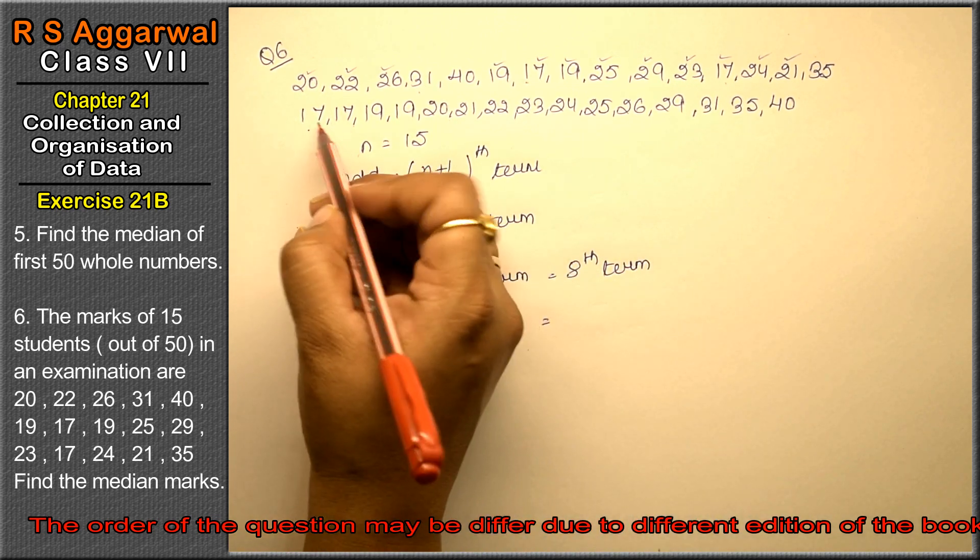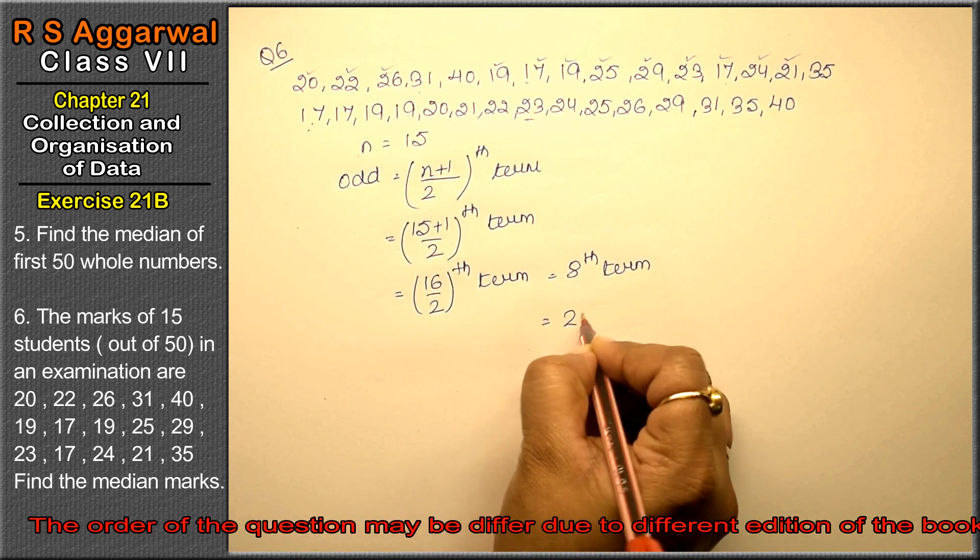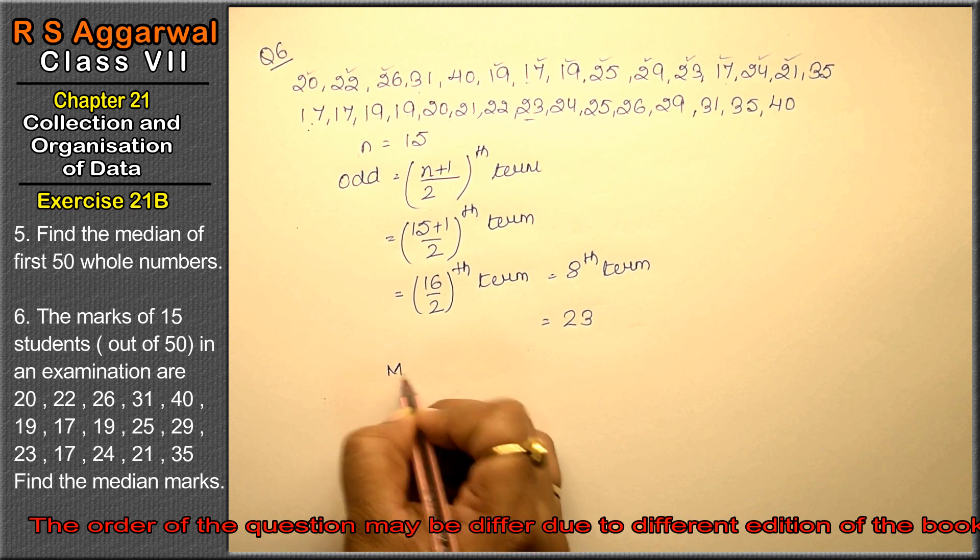So the 8th term: 1, 2, 3, 4, 5, 6, 7, 8 is 23. That is, median equals to 23.